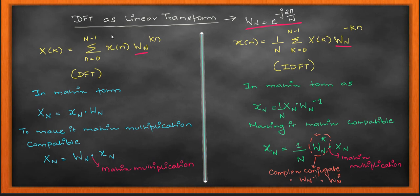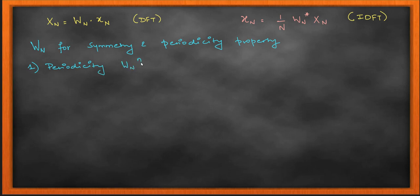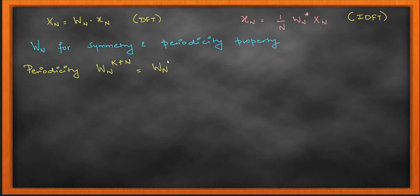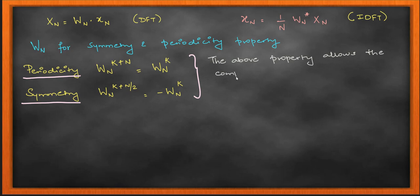So the simplifications we have done to DFT so far are: first, using the substitution W for e to the power of minus j 2π/N; second, the matrix form representation. The next simplification uses the symmetry and periodicity properties of W_N. For the periodicity property: W_N^(k+N) = W_N^k. For the symmetry property: W_N^(k+N/2) = −W_N^k.